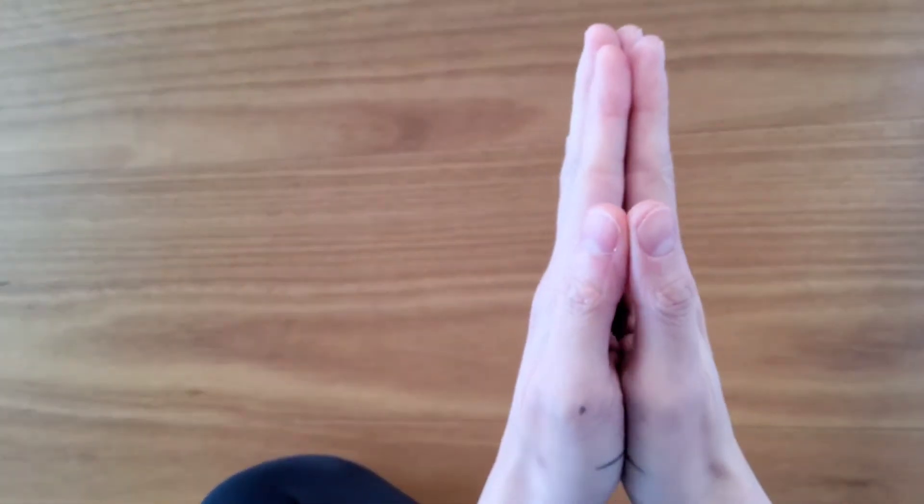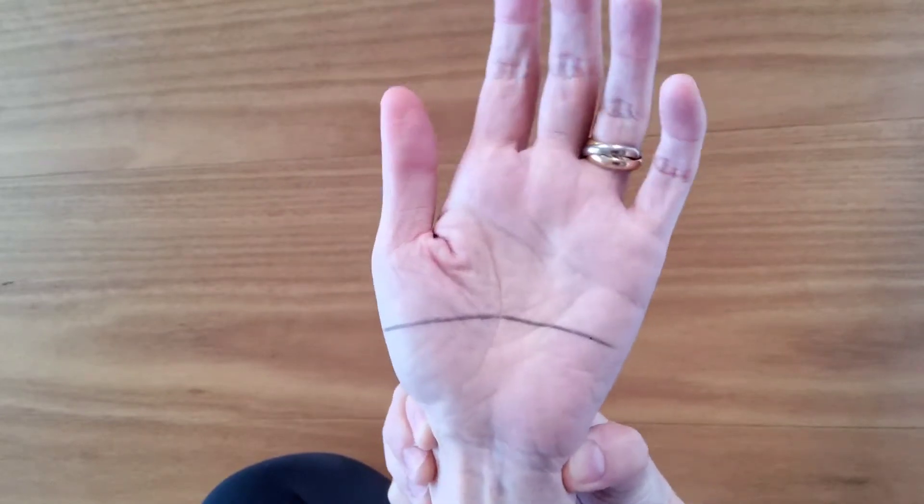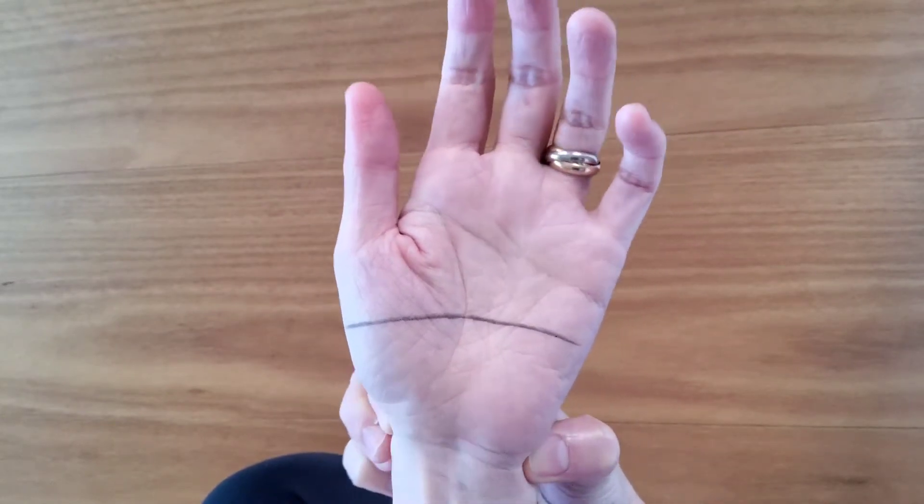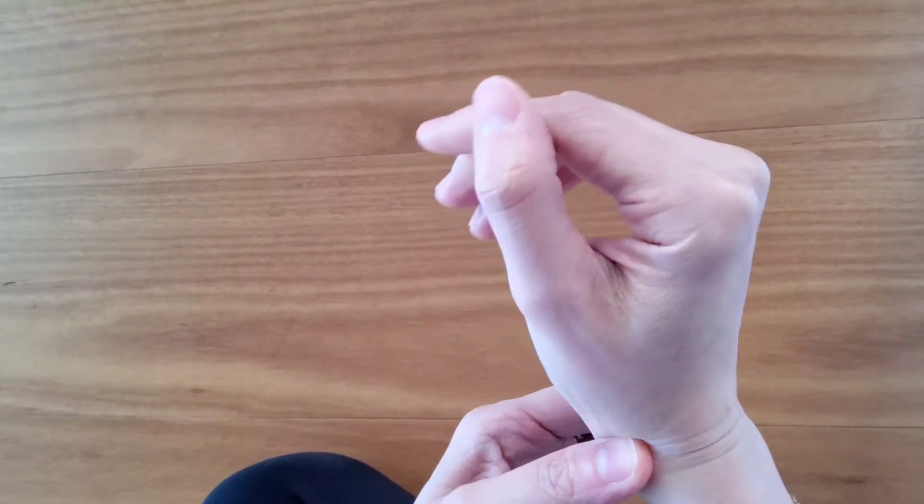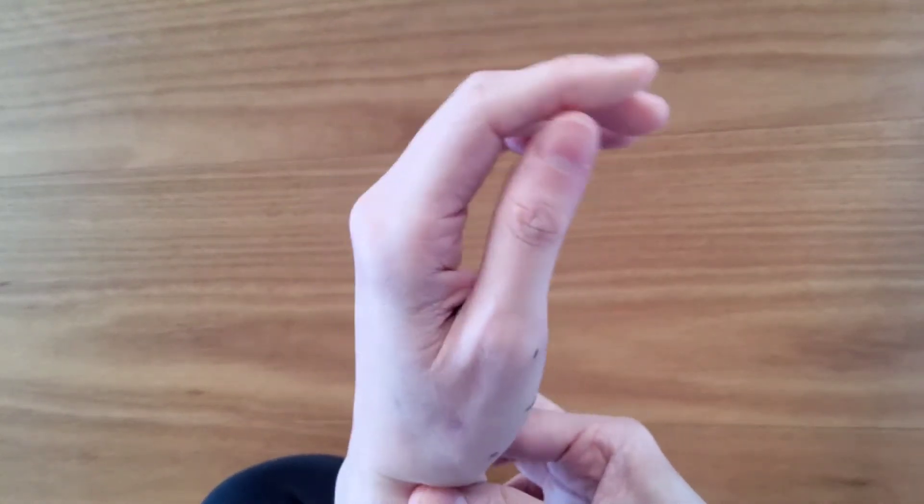To start off, we'll just massage the two little dimples at the base of the palm, left hand and right hand. Gentle pressure. This corresponds to the ovaries and the uterus in the female.